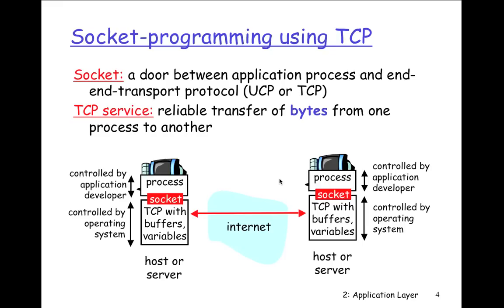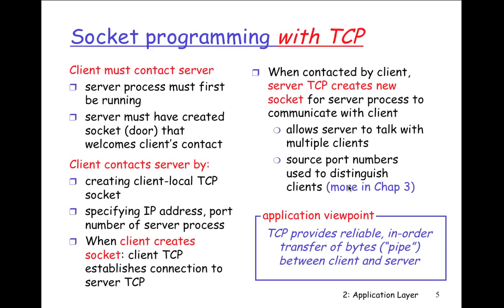TCP is controlled by the application developer in terms of the running process. We create a socket, and then we have TCP with buffers and variables that go back and forth via an internet connection. Both the host and the server are controlled the same way. If you're in the Java EE class, we already went over this — there's a bit of overlap, but I'll give you the stuff specific to the Android environment, phones, and tablet devices.